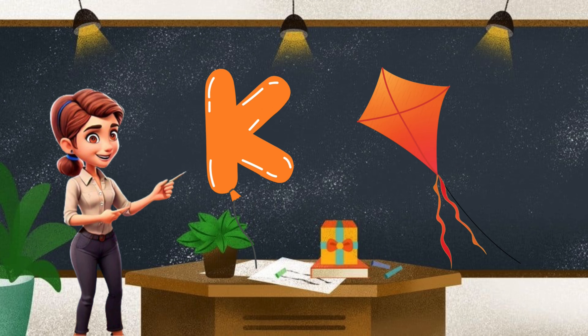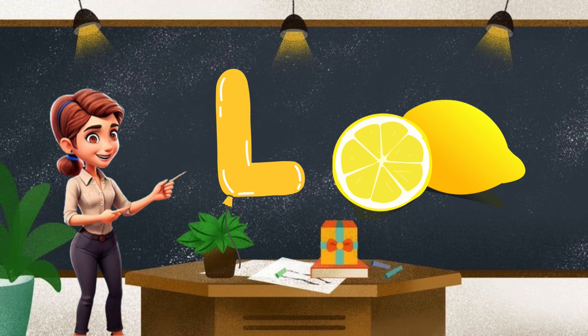K. K for kite, orange. L. L for lemon. It's yellow.